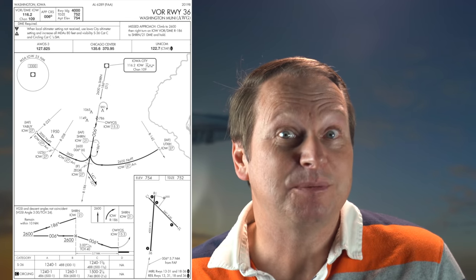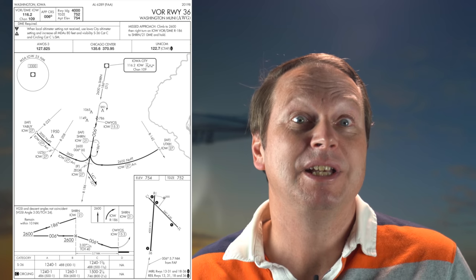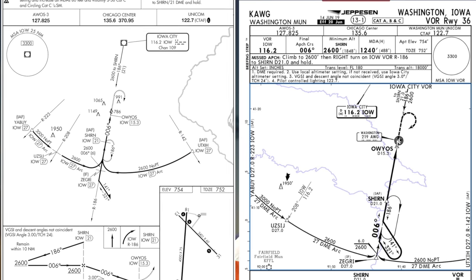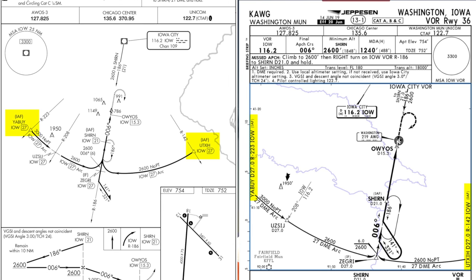One thing I saw where I thought the government chart was a little better can be seen here, on this approach with the DME arc, where Jeppesen has scaled the chart such that the initial approach fixes on the arc fell off the chart. And sure, we don't fly DME arcs as much these days as we used to, but on instrument training flights they still happen regularly.